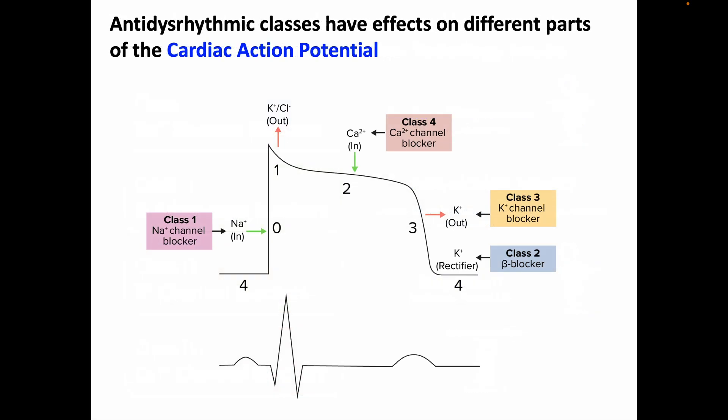As a general overview, the different anti-dysrhythmic drug classes have effects on different parts of the cardiac action potential. Class 1 sodium channel blockers affect depolarization in phase 0. Class 2 beta blockers affect phase 4, making it take longer for the next depolarization to occur. Class 3 drugs block potassium efflux that triggers repolarization in phase 3. Class 4 calcium channel blockers block calcium channels, though their anti-arrhythmic effect isn't simply from blocking calcium influx in phase 2.